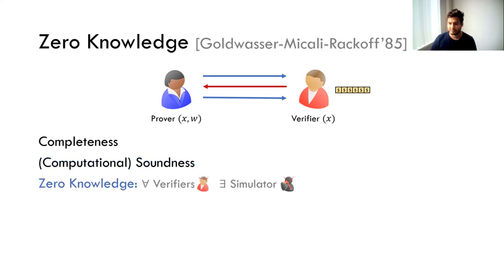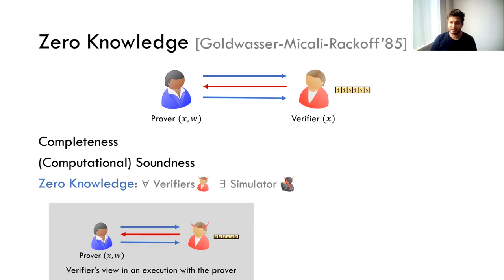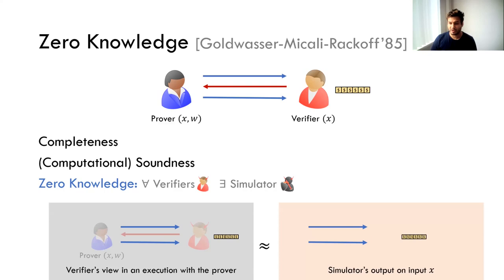The third property, and the most important for this talk, is zero knowledge, which says for every verifier there exists a simulator which can simulate the view of the verifier. The view of the verifier in an actual protocol with the honest prover is the messages that the prover sends and its own random coins. The zero knowledge property says that the simulator on input x can sample a distribution approximately close to the actual view of the verifier, thereby hiding any additional information the prover might have.